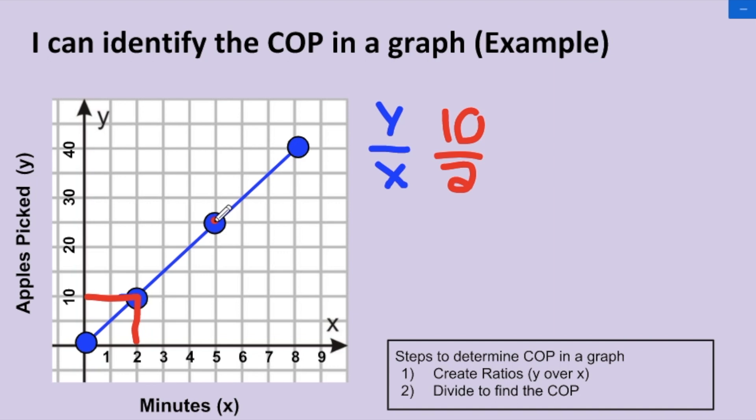This point here has a y value of halfway between 20 and 30 will be 25. And it has an x value of 5. And the last point on the graph, we have a y value of 40 and an x value of 8.